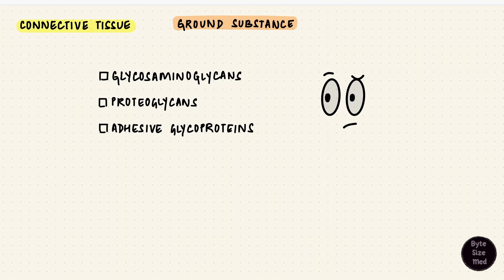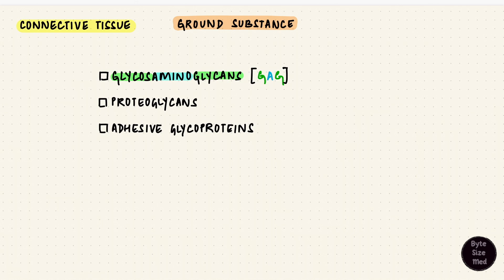To remember these three names, here's a way to think about it — they're all a mix of carbohydrates and proteins, glycans and proteins. Glycosaminoglycans: carbohydrate, protein, carbohydrate — GAG is all you need to remember. The next two look like the same thing just flipped around: proteoglycan, flip it around, glycoprotein. Just because they sound similar does not mean they are the same.